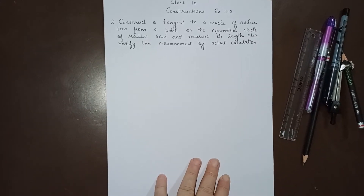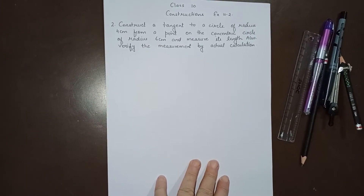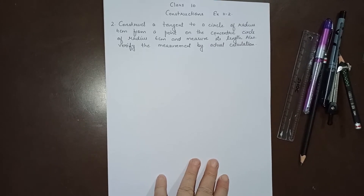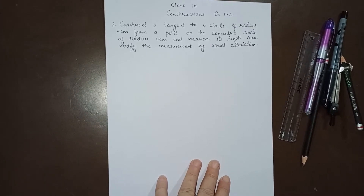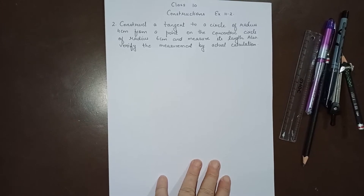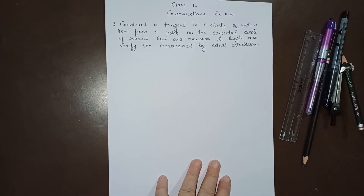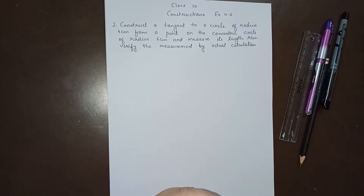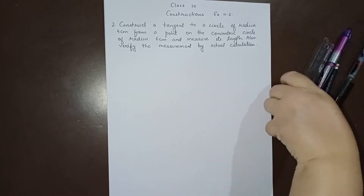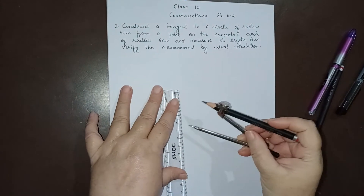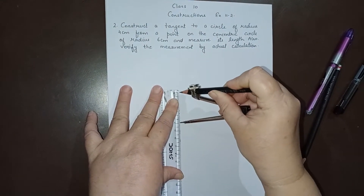Today we are going to do question number 2 of Exercise 11.2, Chapter Construction, Class 10th. The question is: construct a tangent to a circle of radius 4 centimeters. First of all, we will make a circle whose radius is 4 centimeters. We will open the compass to 4 centimeters and draw a circle.